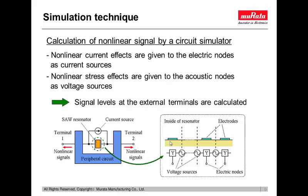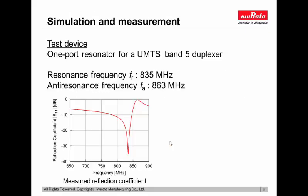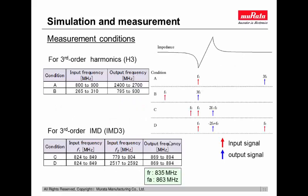Next, by using this technique, we perform some calculations of nonlinear signals and compare the results with experimental data. As a test device, we employ a SAW resonator for a UMTS SAW duplexer. This figure shows the measured reflection coefficient of the resonator. Its resonance and anti-resonance frequencies are 835 MHz and 863 MHz respectively. By using this resonator, we perform simulations and measurements in four conditions shown in this figure.